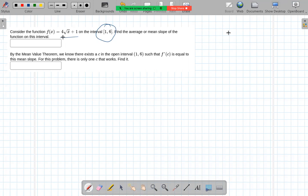Well, we just look at what the slope is between those two points, so we need to figure out what is f of 6, and we're going to subtract from that f of 1 and divide by 6 minus 1. So that's the mean slope of the function on that interval.